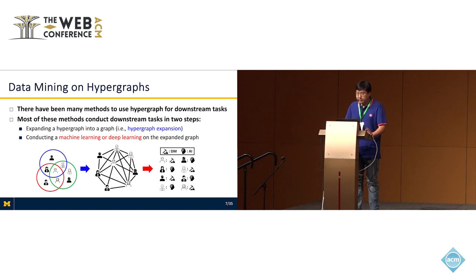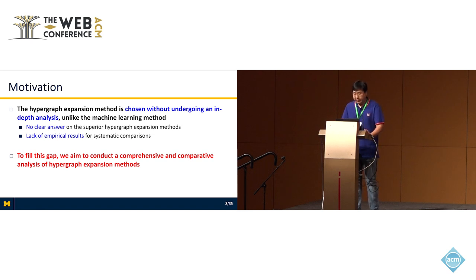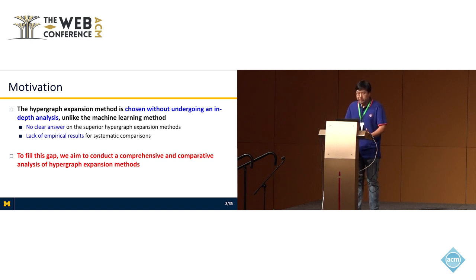Most of these methods conduct downstream tasks in two common steps: expanding the hypergraph into a graph, which is defined as hypergraph expansion, and then conducting machine learning or deep learning methods on the expanded graph. In this paper, we tackle this process, as the hypergraph expansion method is often chosen without in-depth analysis. Unfortunately, there is no clear answer on the superior hypergraph expansion method, and there is a lack of empirical results for systematic comparisons. To fill this gap, we aim to conduct a comprehensive and comparative analysis of hypergraph expansion methods.